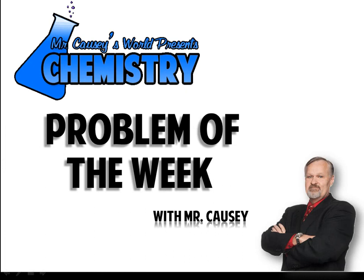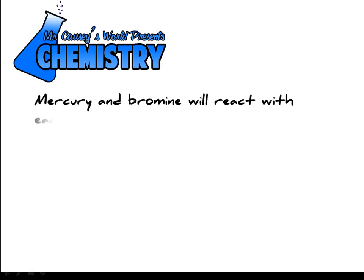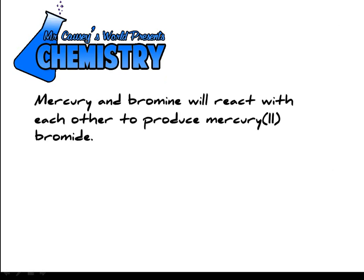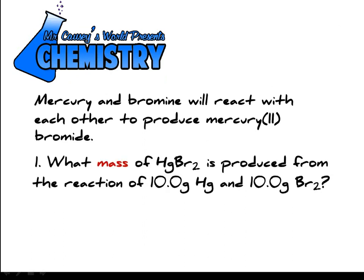Howdy everyone. Mr. Kazi here with another problem of the week. Get out your calculators, get your periodic tables, get a pencil and let's get started. This week's problem: mercury and bromine will react with each other to produce mercury 2-bromide. What mass of mercury 2-bromide is produced from the reaction of 10 grams of mercury and 10 grams of bromine?